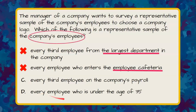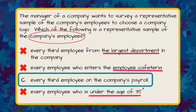D says every employee who is under the age of 35. Well, that shows bias — you're only asking the younger people of the company, and anybody over the age of 35 doesn't get to weigh in on the new logo. So that's not random. The most random choice would be C: every third employee on the company's payroll.